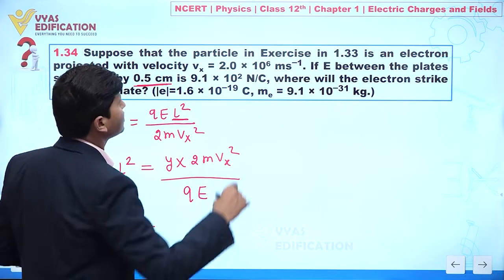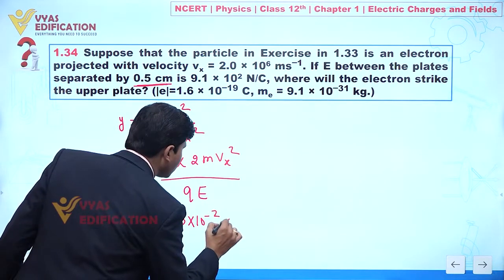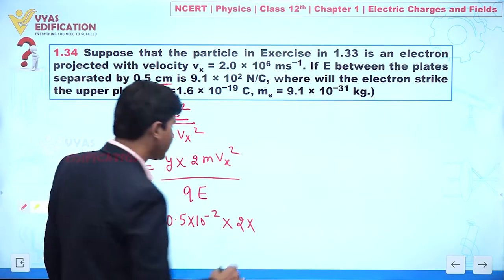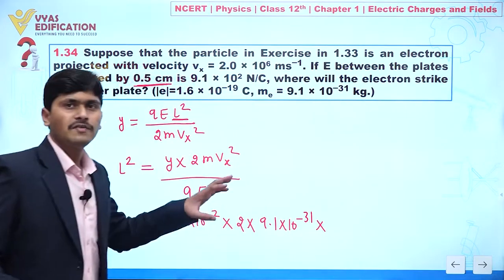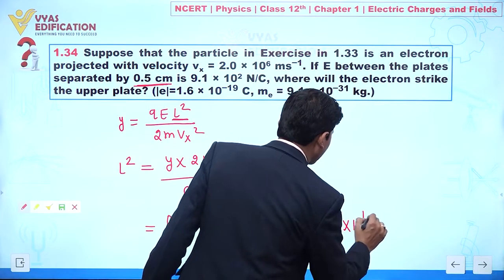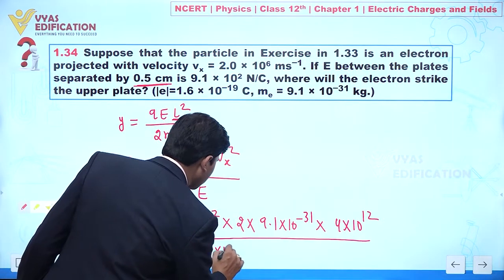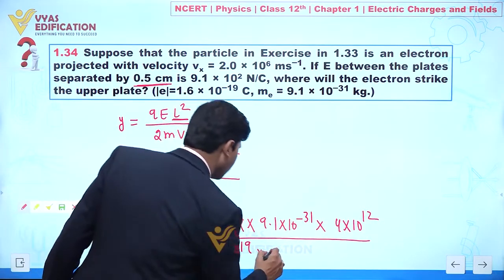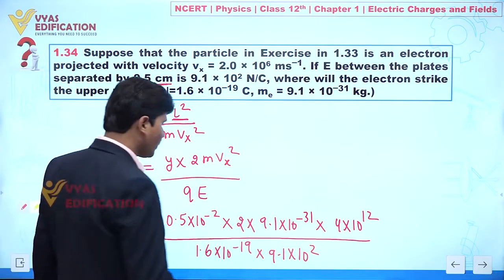Substituting values: y = 0.5 cm = 0.5×10⁻² m. Mass of electron m = 9.1×10⁻³¹ kg. vx² = (2×10⁶)² = 4×10¹². Charge of electron q = 1.6×10⁻¹⁹ C. Electric field E = 9.1×10² N/C.